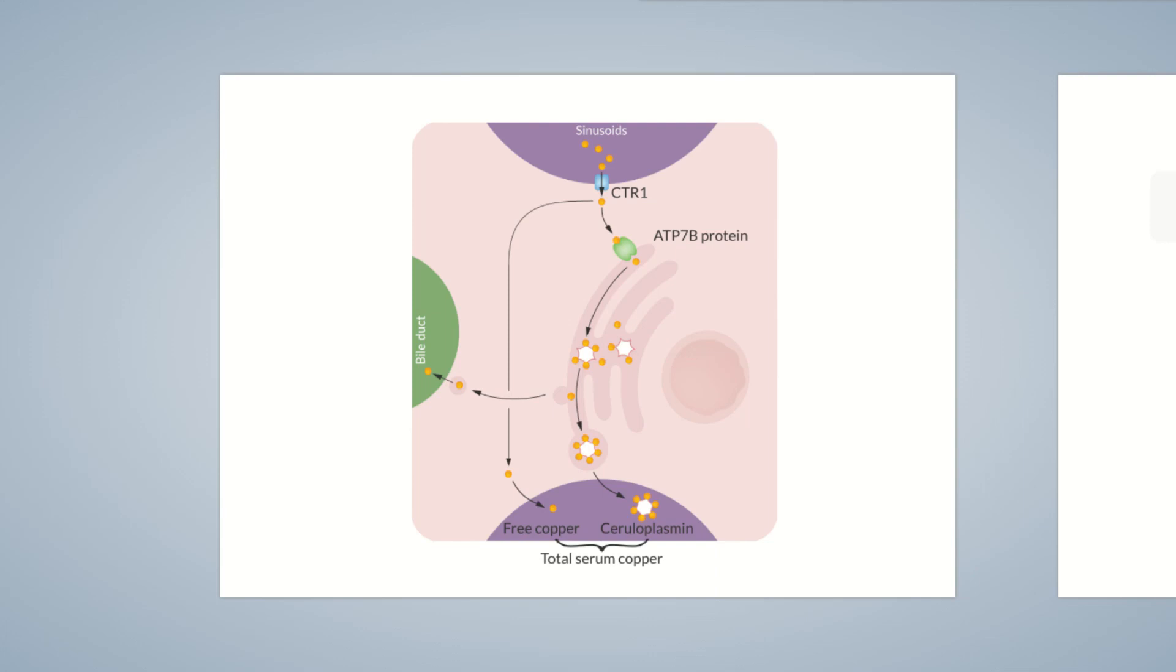ATP7B plays a very crucial role in this process. It's responsible for trafficking copper into the Golgi apparatus. However, if dysfunctional, it leads to Wilson disease.